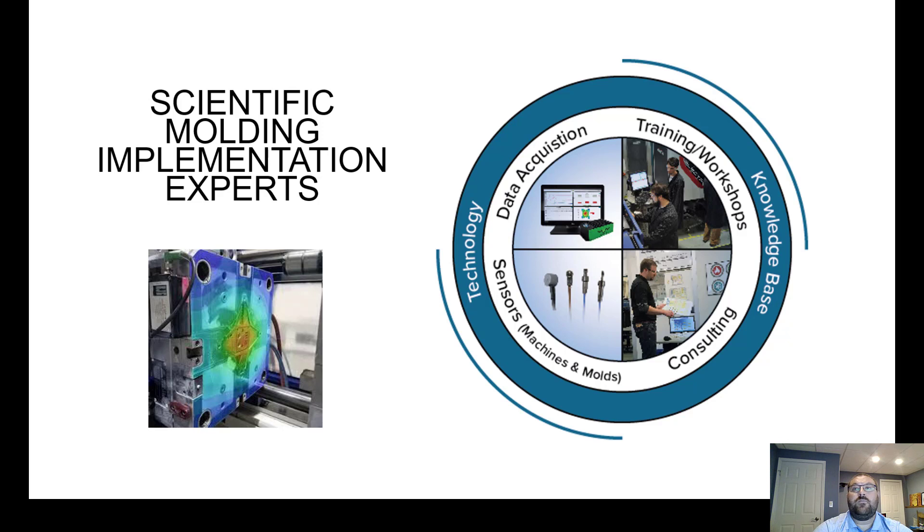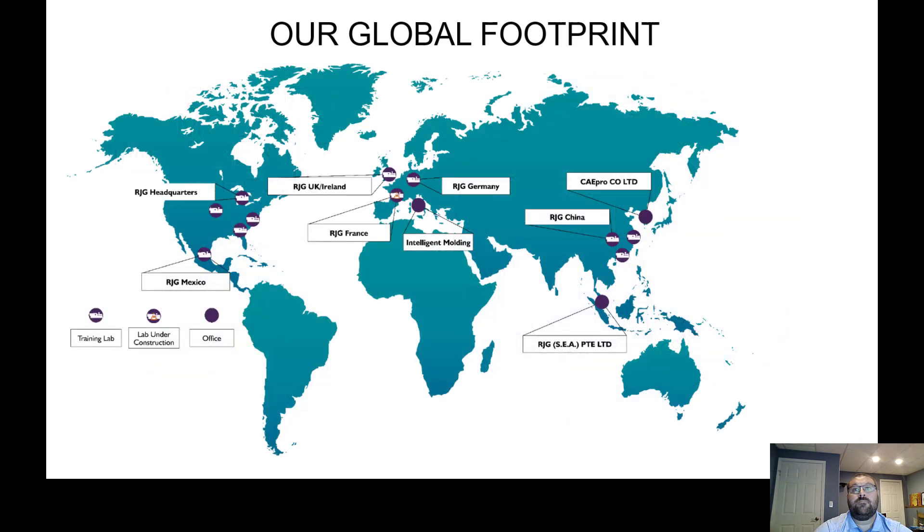RJG has been in the plastics industry for over 35 years and is headquartered in Traverse City, Michigan. We are recognized as a scientific molding pioneer in the industry. RJG operates in three continents, as shown on the map, with nearly 200 direct employees. My international colleagues are experienced, hands-on professionals in different domains of the industry.